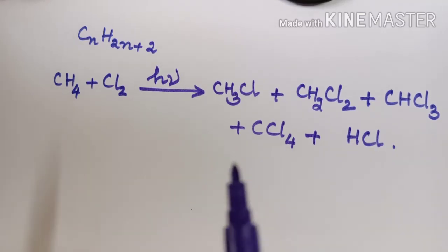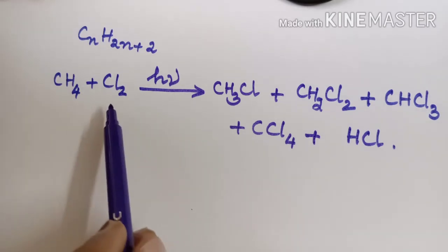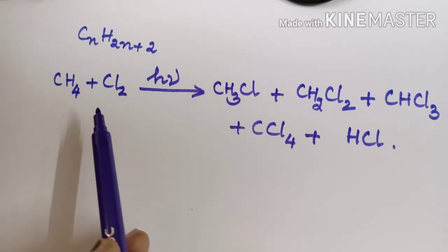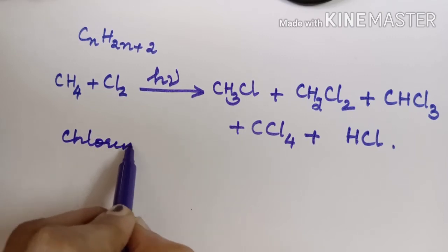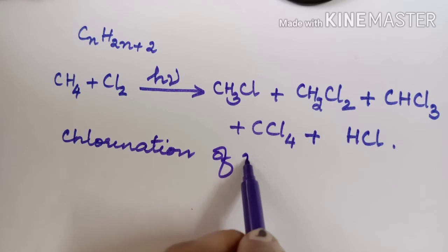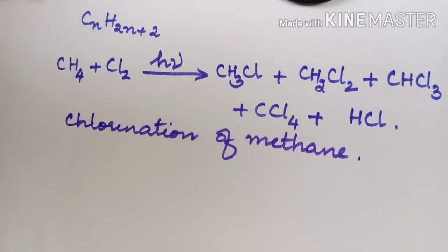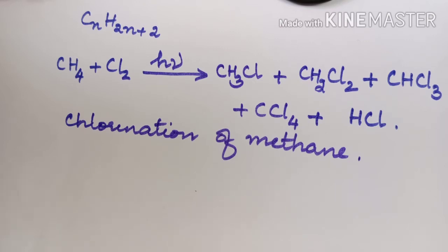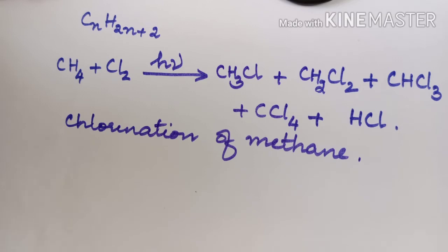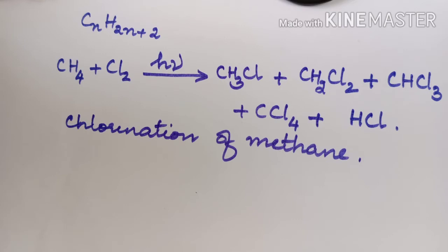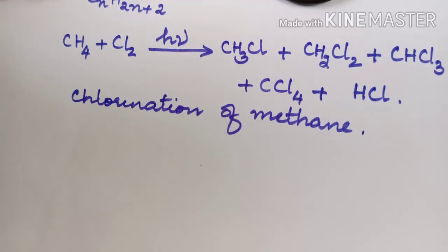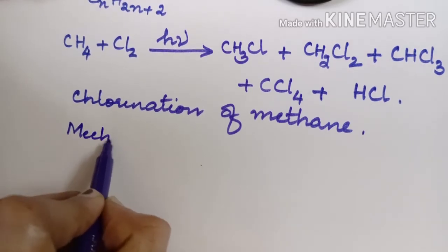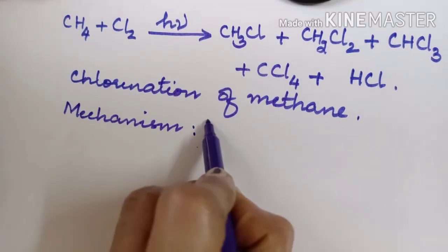This process is called halogenation. Here it is chlorine that is getting substituted, so in particular this is known as chlorination of methane. Chlorination necessarily happens only in the presence of sunlight. The mechanism of chlorination of methane — the way in which the chemical reaction proceeds to give different products — is known as free radical mechanism.